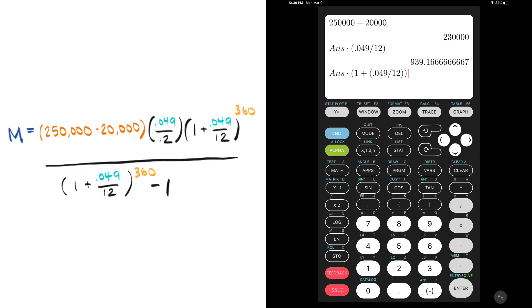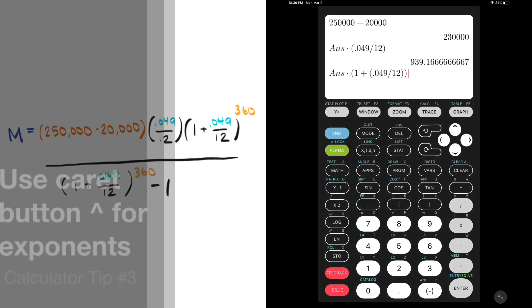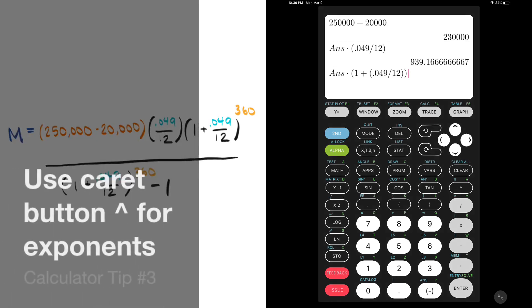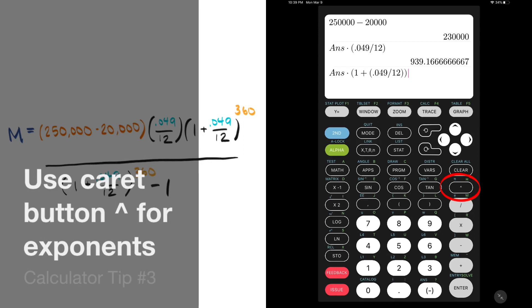It may get a little tricky keeping track of all the parentheses, so be careful typing those in or you may get an error. The next part will require more layers of parentheses. But before we get there though, here's calculator tip number three: use the caret button for exponents. This little up arrow button means you can take any value and raise it to any power.